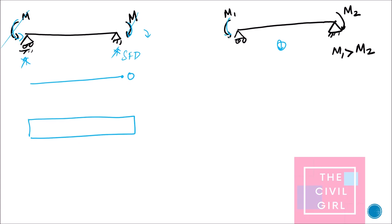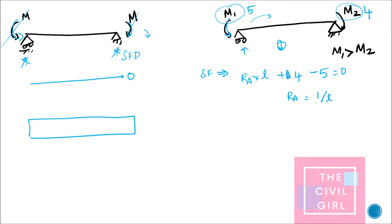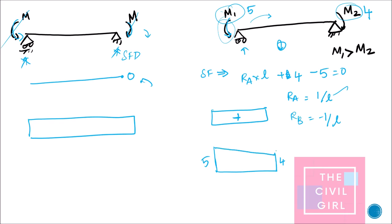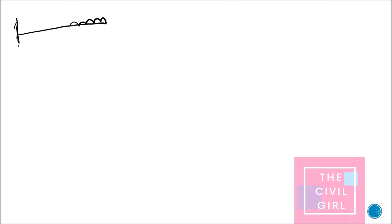Next: this beam has two moments m1 and m2 where m1 is greater than m2 — say 5 kN and 4 kN. For shear force calculation: since the moments don't cancel, RA equals (m1−m2)/L = 1/L and RB equals −1/L. The shear force diagram is present and positive. For the bending moment diagram there are moments at both ends — 5 here and 4 here — and the variation between them is linear.